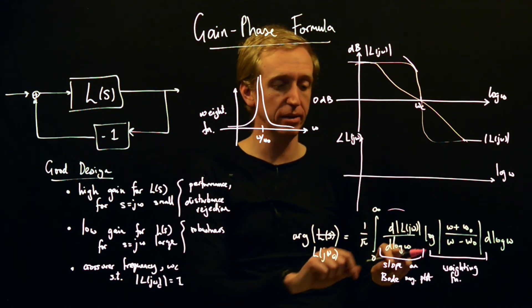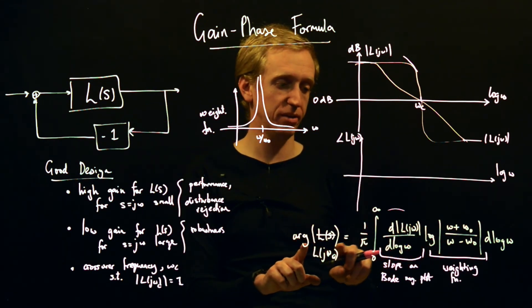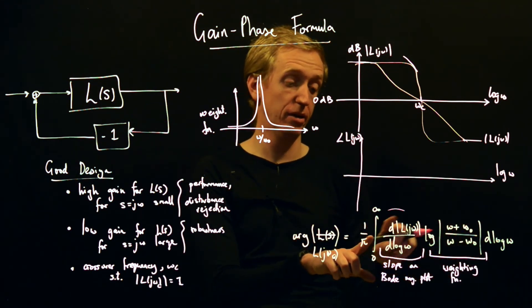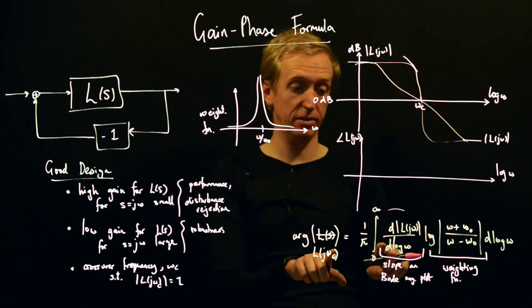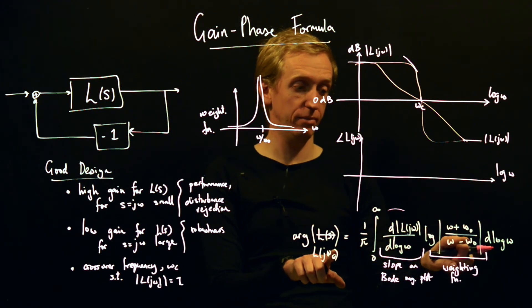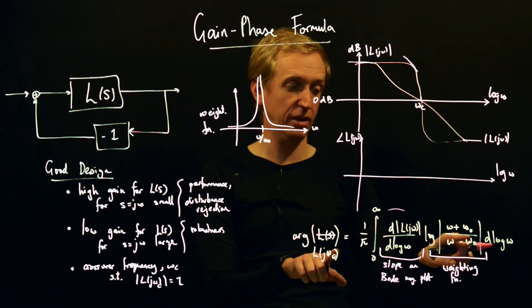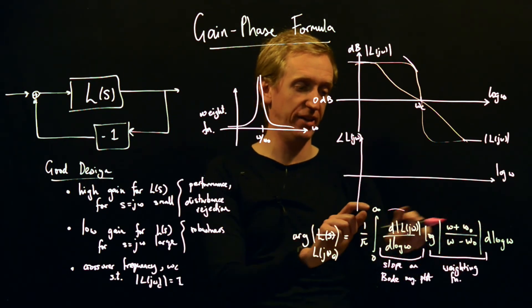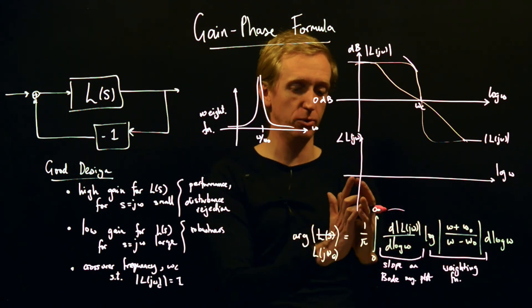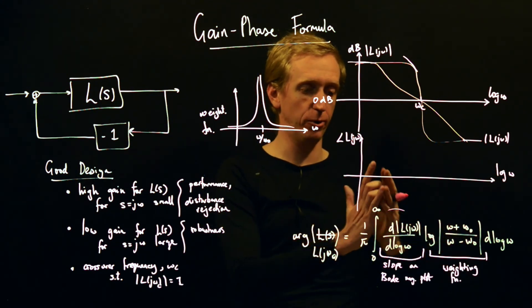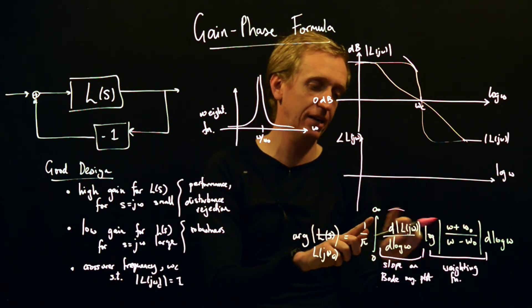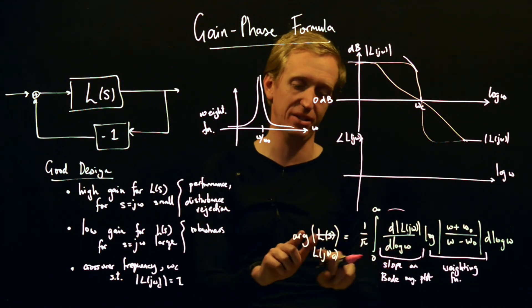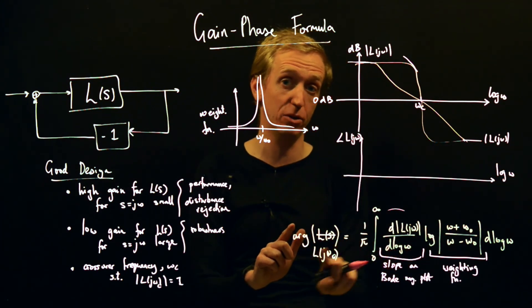That's what's really important here. What this means is that this integral is effectively saying that the argument is determined by the size of the slope at any given point. The effect of this integral is that the weighting function focuses all its weight around the frequency ω_0. So it's the value of the slope at ω_0 that essentially determines the argument at ω_0. And this is why we have a problem.